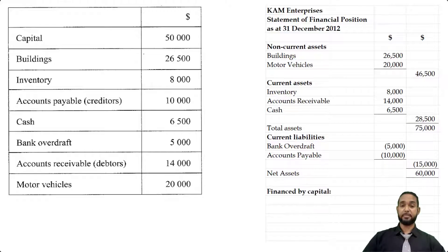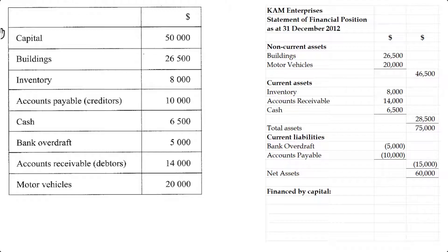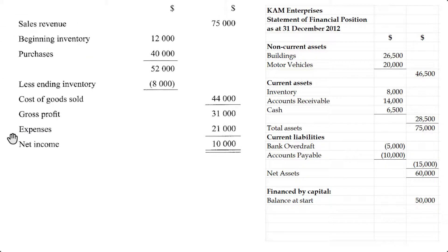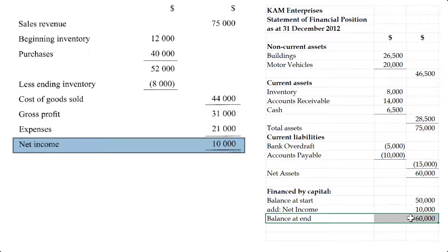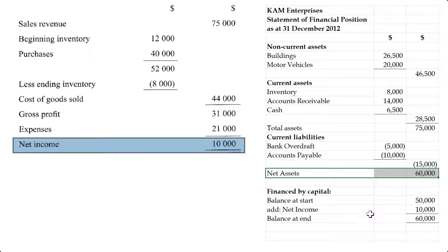When we subtract that 15,000 from the total assets of 75,000, we get net assets of 60,000. Net assets must be financed by capital. The opening balance of capital, according to the table, was 50,000. We can add net profit and minus drawings. We had no drawings, but we did have net profit of 10,000 as per the income statement above. That fits perfectly to give us a balance at end of 60,000, and our statement of financial position balances.